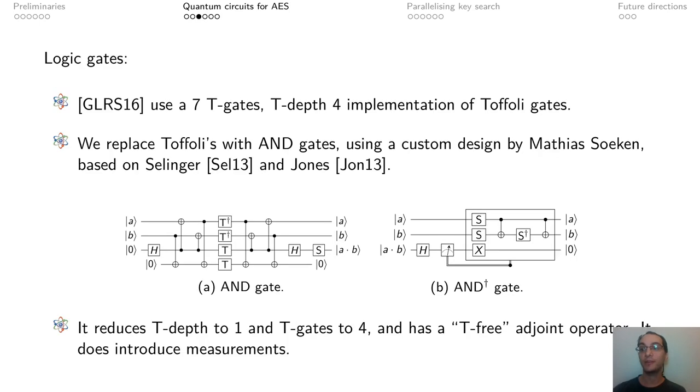We also looked at the fundamental logic gates. The most costly gates seem to be AND gates. Previous work implemented it by using a Toffoli gate with a specific design. We replaced these Toffoli gates by a smaller design for an AND gate. This does not work as a Toffoli gate, but it's sufficient for AES and it's much smaller. Furthermore, its adjoint operator uses measurement-based computation, resulting in an adjoint operator free of T gates.